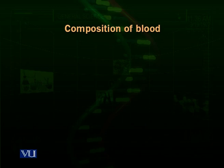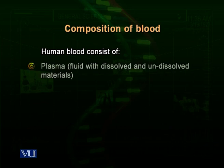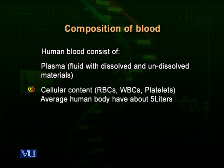So the blood — the circulatory fluid — what is blood itself? Blood is a watery fluid which has different types of dissolved and undissolved contents present inside. If we want to categorize its contents, we can divide them into two major categories: the plasma, the fluid which has dissolved and undissolved materials, and the cellular contents.